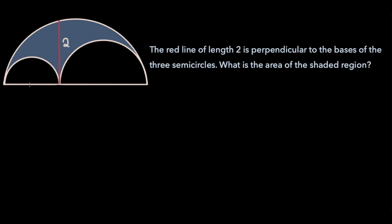To begin, let's call the radius of the smallest semicircle r1, and the radius of the middle sized semicircle r2. The diameter of the largest semicircle, then, must be 2r1 plus 2r2, and so its radius must be half that, or r1 plus r2.